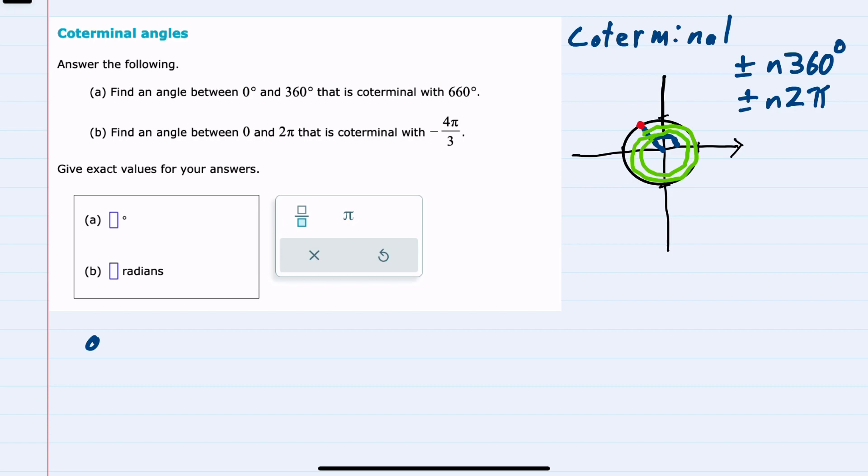In example A, we start with 660 degrees. We're asked to find a coterminal angle between 0 and 360 degrees. Since 660 is larger than that range,